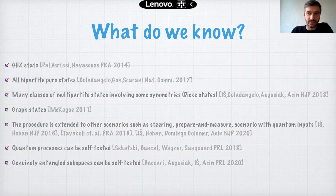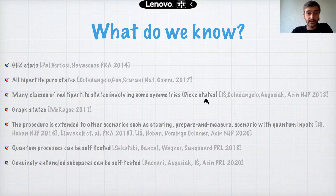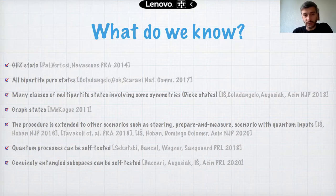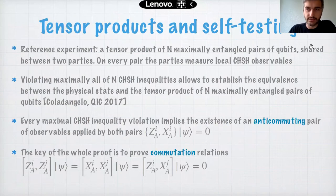In the last ten years there have been many results in self-testing: beyond maximally entangled states, we know how to self-test GHZ states, all bipartite pure states, many classes of multipartite states involving symmetries like Dicke states, qudit GHZ states, and graph states. The framework was also extended to steering, prepare-and-measure scenarios, quantum inputs, quantum processes, and weaker notions such as self-testing into a specific entangled subspace.